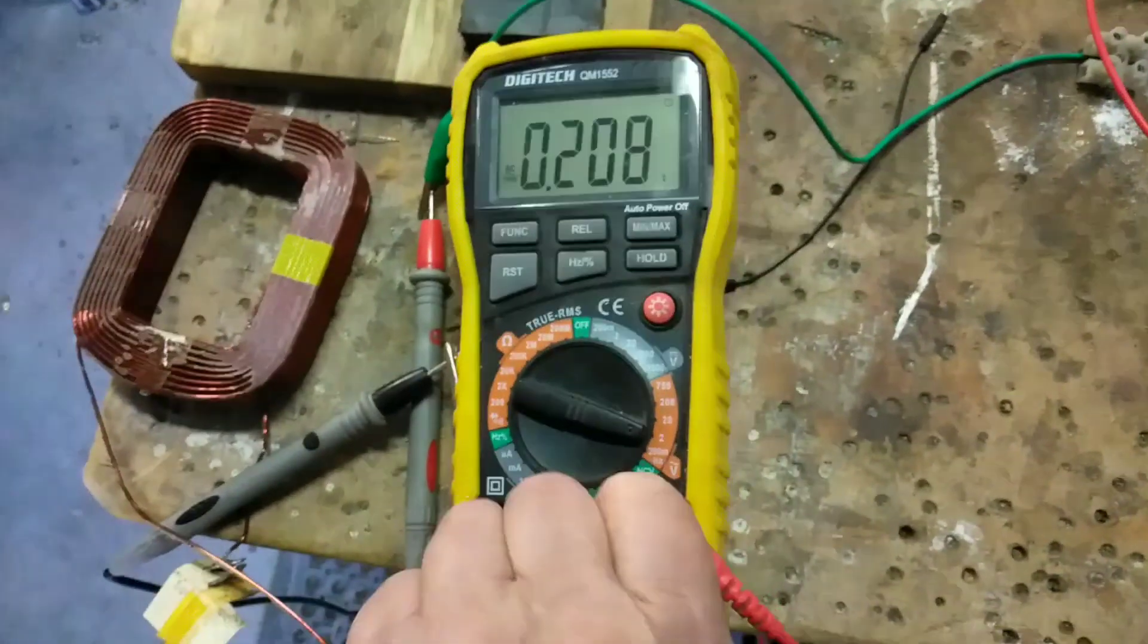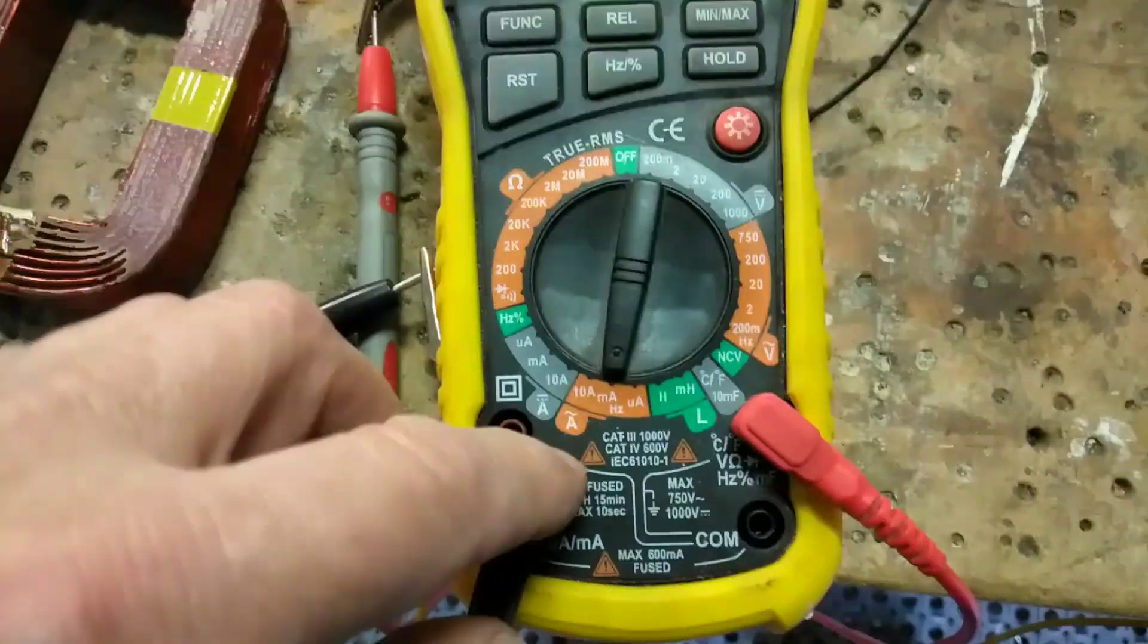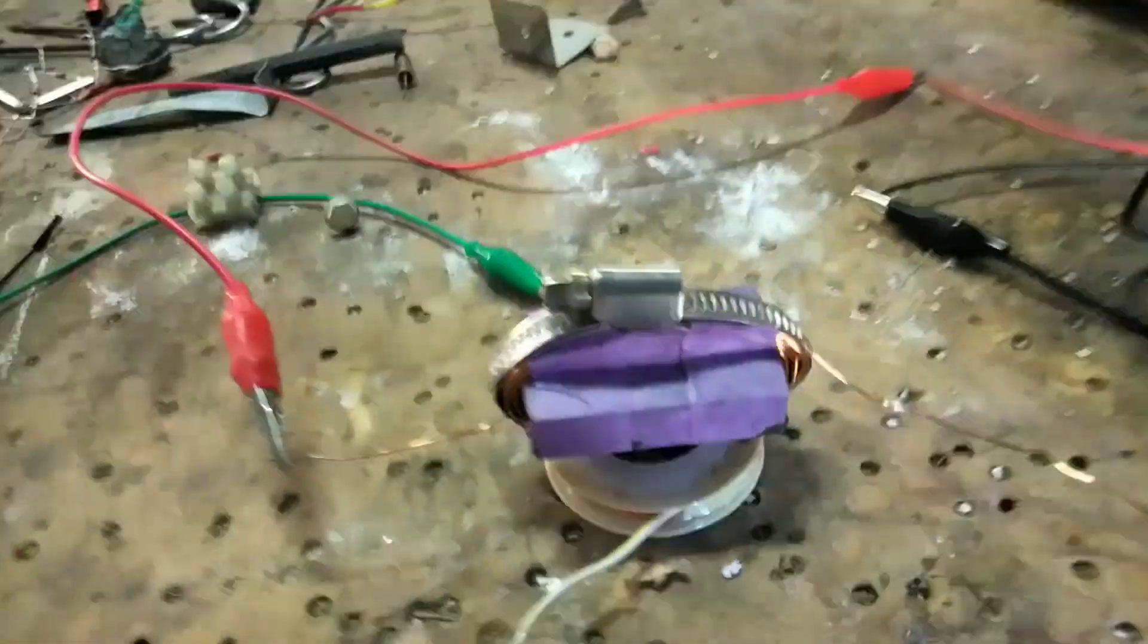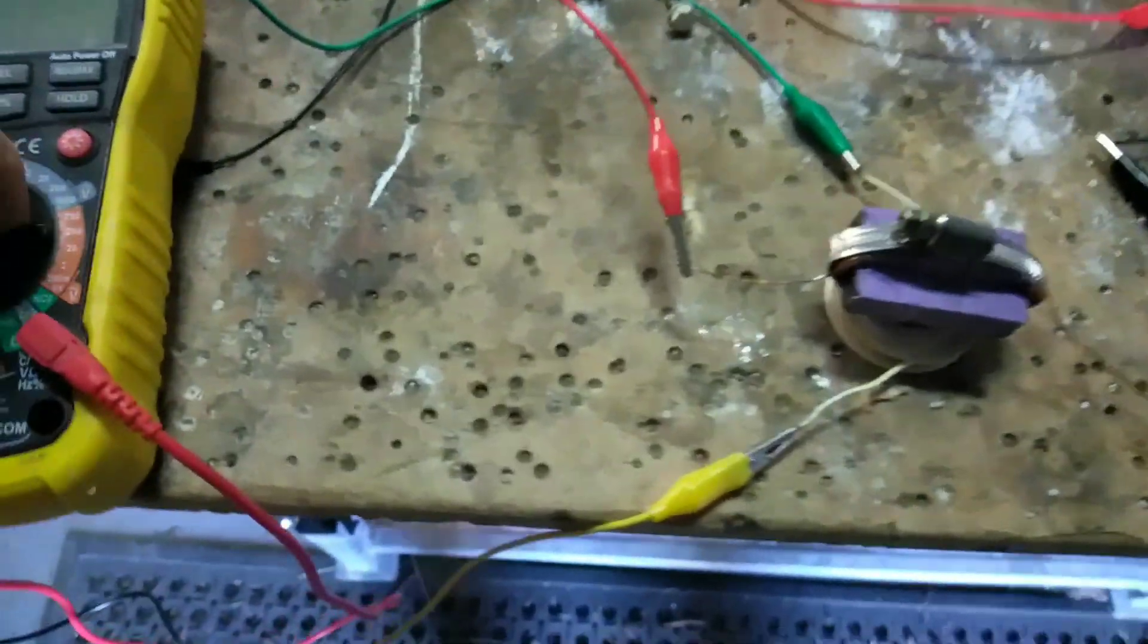So current-wise, still absolutely no current for some reason. That's on the correct setting, so I'm not sure. Maybe because that coil there is so fine, the wire is so fine. But anyway, I'll have to muck around and see what the hell's going on. I'll come back.